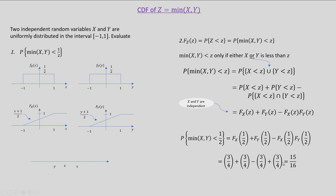After substituting — note there is a typo in the slide, the operator should be multiplication — and after simplification, we get the result equal to 15/16. Hopefully this problem helps you in understanding the evaluation of the CDF of the transformation z equal to minimum of x comma y. Thank you.